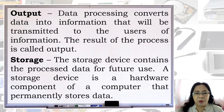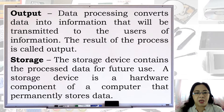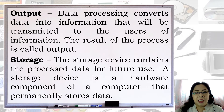Output: data processing converts data into information that will be transmitted to the users of information. The result of the process is called the output. Storage: the storage device contains the processed data for future use.